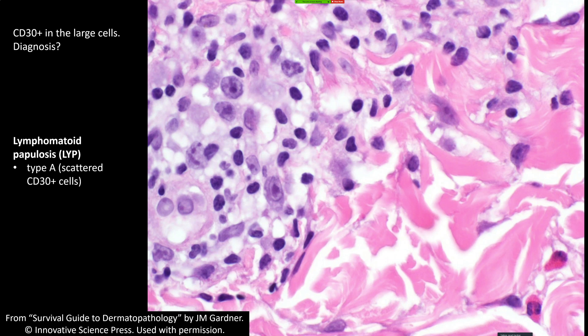When I see scattered CD30-positive cells and don't feel there are too many or that they're clustered, I describe them in my microscopic comments as scattered CD30-positive cells that I favor to be reactive, noting the number seems normal for the density of the infiltrate. But if I have some suspicion, I'll note that lymphomatoid papulosis would be a possibility in the right clinical setting — maybe this is just the first onset and they don't have waxing and waning papules yet.